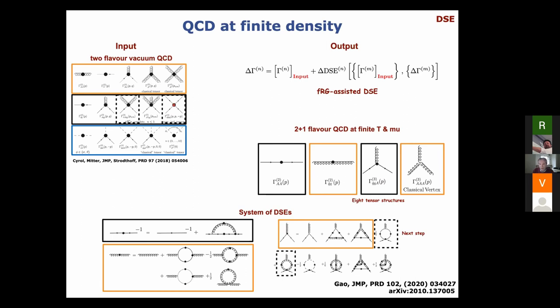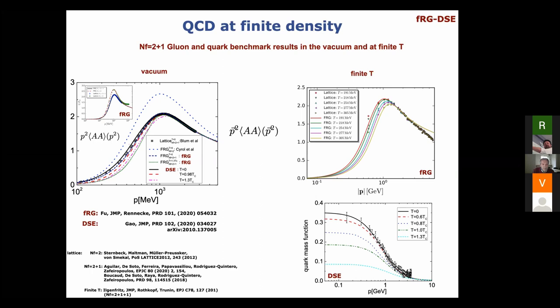Let's come to benchmarks. Our input is essentially the dashed curve, which is bang on the lattice results, as I said. Our result for the 2+1 flavor gluon propagator is again bang on the lattice results, and you can see the same for the Dyson-Schwinger curve. We can also compare at finite temperature — so at finite temperature and in the vacuum, we are in quantitative agreement with the lattice results.